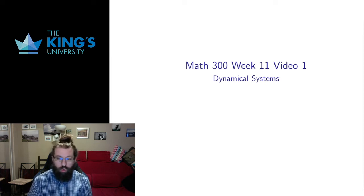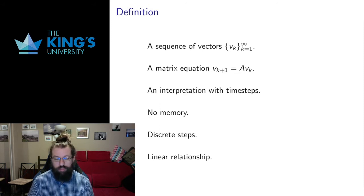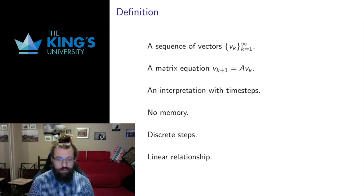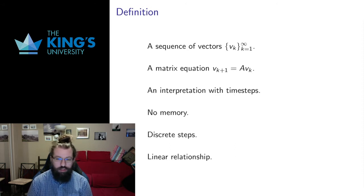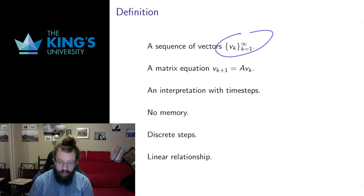We're going to talk about a whole set of mathematical models called dynamical systems. A dynamical system is a sequence of vectors, and the vectors represent the state of the system. That could be a whole variety of different things depending on what you're modeling — we'll see examples from probability and population biology in future videos.